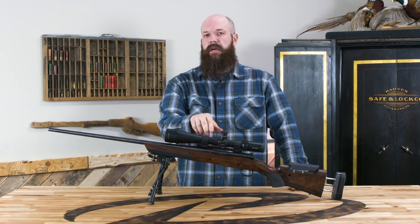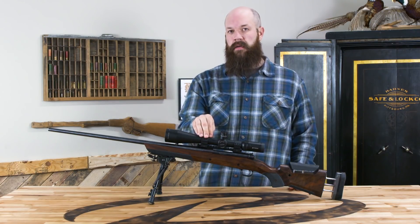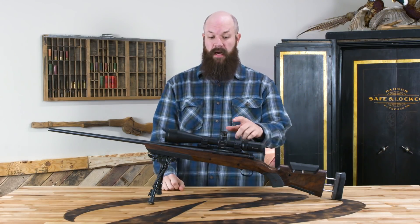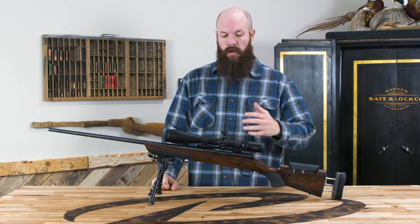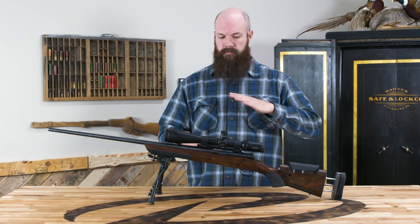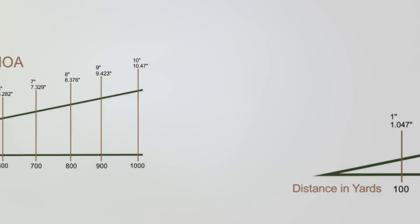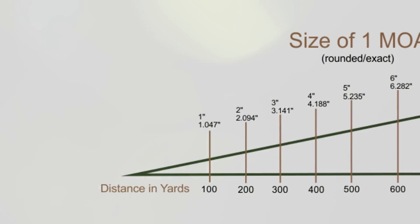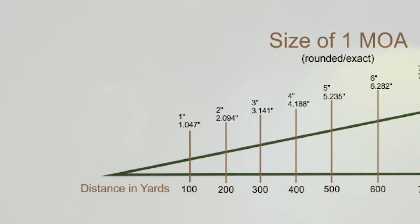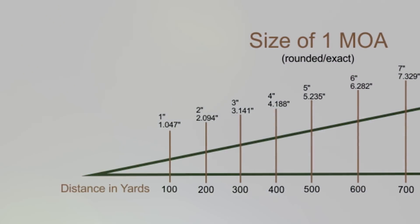To start this out, we're going to look at MOA first. It's a little easier to understand starting out and it's very commonly used in the US and on most rifle scopes. We'll put up a graph to show what a minute of angle means. Basically, one minute at 100 yards equals one inch, one minute at 200 yards equals two inches, one minute at 300 yards equals three inches — it just keeps scaling farther away.